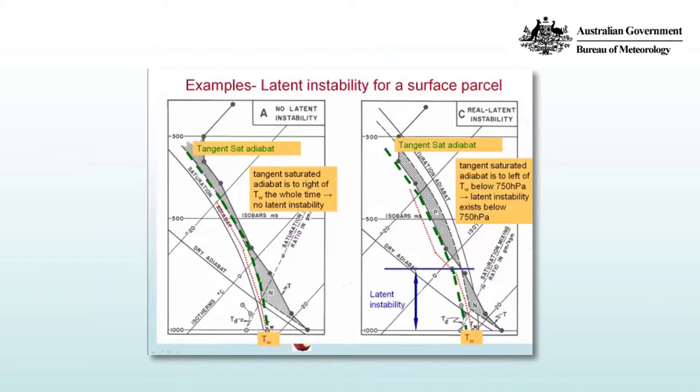On this figure we see an example on the left where a surface parcel has no latent instability. The tangent saturation adiabat is marked in green, and the wet bulb temperature for the surface pressure moves along a saturated adiabat represented by the red dotted line. This line is to the left of the tangent saturation adiabat and the temperature profile, so no amount of lifting will release instability.